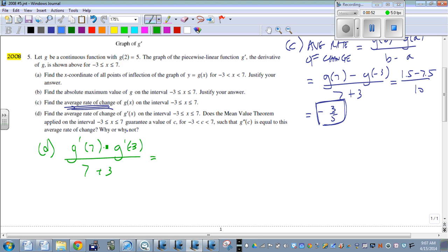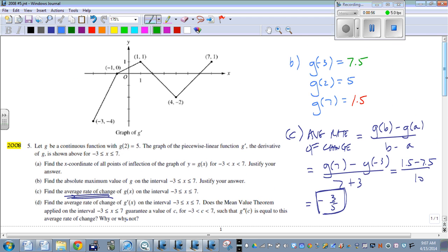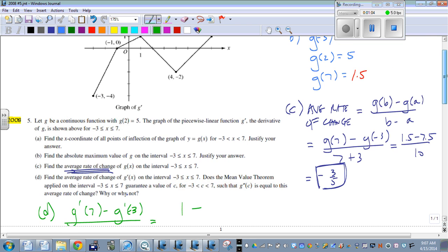So to figure out these, all we have to do is look at the graph. Derivative of G of 7, well this is the derivative. If we put 7 into the derivative, we get 1 out. So we have 1 minus derivative of G of negative 3.